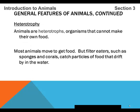Heterotrophy. Animals are heterotrophs — organisms that cannot make their own food. They are organisms that have to move to get their food. Most organisms must move in order to feed, except for animals like sponges and corals, which are considered filter feeders. They simply stay in the location where they are growing and filter the water column to catch any floating particles of food.